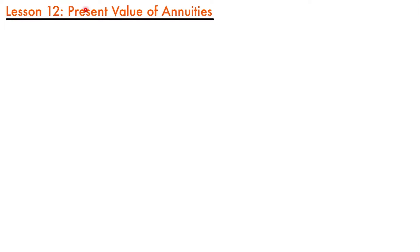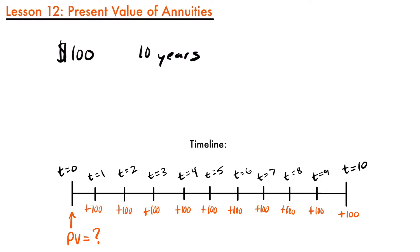Welcome back. Today we're going to be talking about the present value of annuities. Last time we discussed how to find the future value of annuities, or a series of periodic payments, but now we want to talk about how to find their present value. For example, let's say you wanted to open a bank account with a single deposit today at time equals zero, and deposit an amount such that you can withdraw $100 each year for 10 years, with the first withdrawal taking place one year from today at time equals one, given an interest rate of six percent or 0.06.